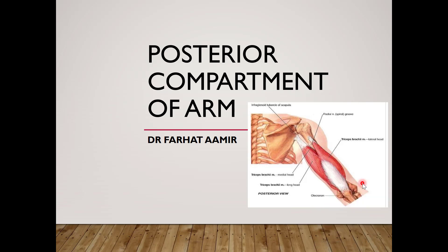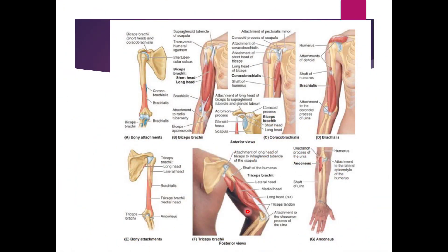In this diagram you can see the posterior compartment of arm. There is one muscle named as triceps brachii muscle. 'Tri' means three and 'ceps' is related to heads, and 'brachii' means arm. This is the three-headed muscle present in the posterior compartment of arm. It has a lateral head, a medial head, and a long head. There is another muscle named as anconeus.